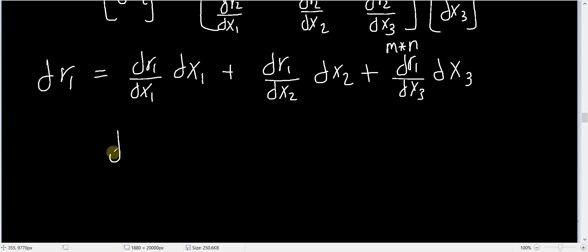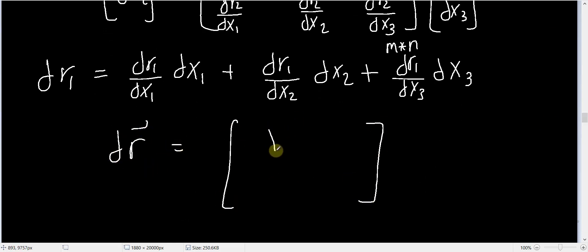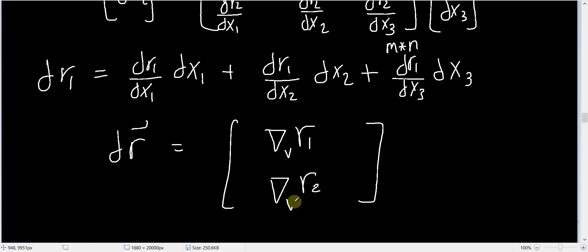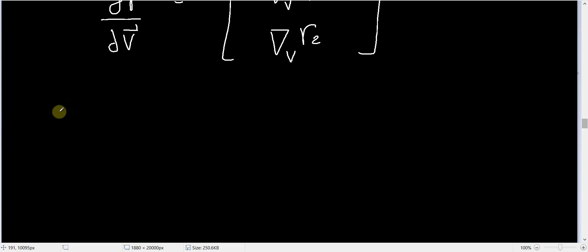In general, dr/dv can be written with the gradient of r1 with respect to vector v in the first row and the gradient of r2 with respect to vector v in the second row. Since we defined the gradient to be a row vector, this representation is natural and equals dr/dv.